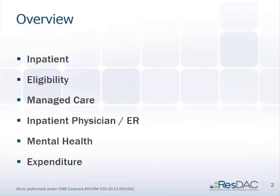These are the topics I'm going to talk about. I'll talk about inpatient expenditure and how, if you really want a complete picture of inpatient expenditure, you need to look at a couple of different files. I'm also talking about looking at eligibility — even though MAX does the eligibility category linking for you, you still might want to reduce it a bit further — how to identify managed care, mental health claims, and ER expenditure.